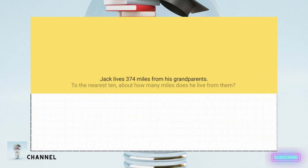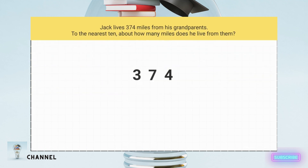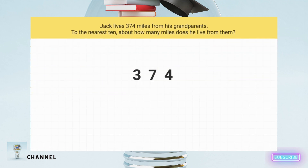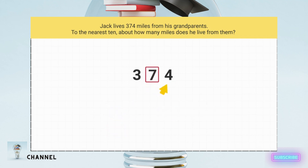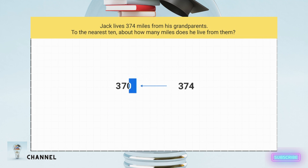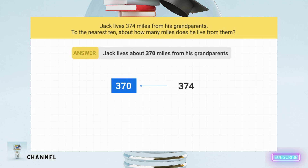Jack lives 374 miles from his grandparents. To the nearest 10, about how many miles does he live from them? The problem tells you that you're rounding to the nearest 10. You circle the tens place and then underline the ones place. Then you look at the underlined digit. 4 is less than 5, so the circled number, 7, stays the same. Then you turn all the digits to the right into zeros. When rounded to the nearest 10, 374 rounds down to 370. Jack lives about 370 miles from his grandparents.